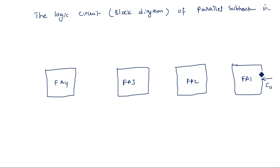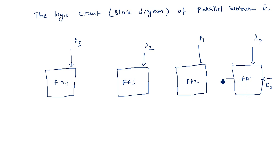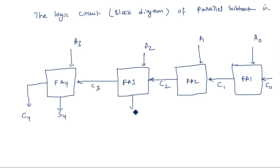Initially we have a carry C0, and inputs A0, A1, A2, A3 are applied to the respective full adders. The carry generated from the first stage is applied to the next stage as C1, then C2 and C3. The resultant carry from the last stage is C4. The sum outputs are S4, S3, S2, S1. Now, we need to apply one's complement of B plus 1.